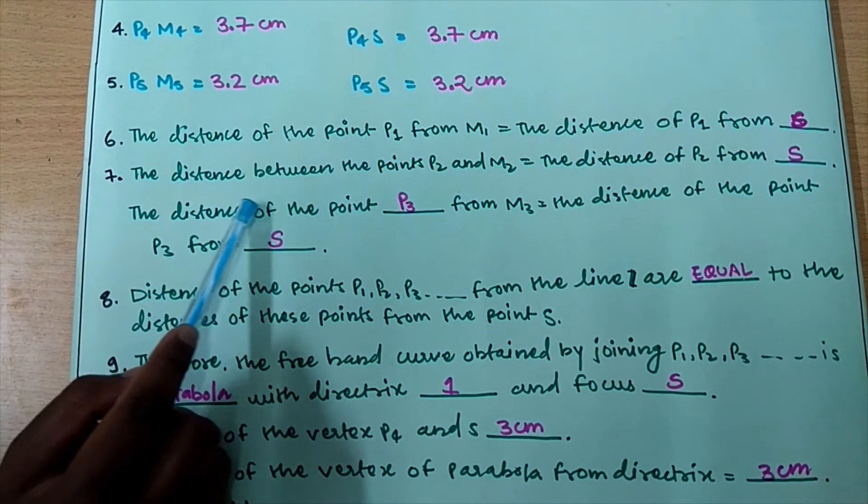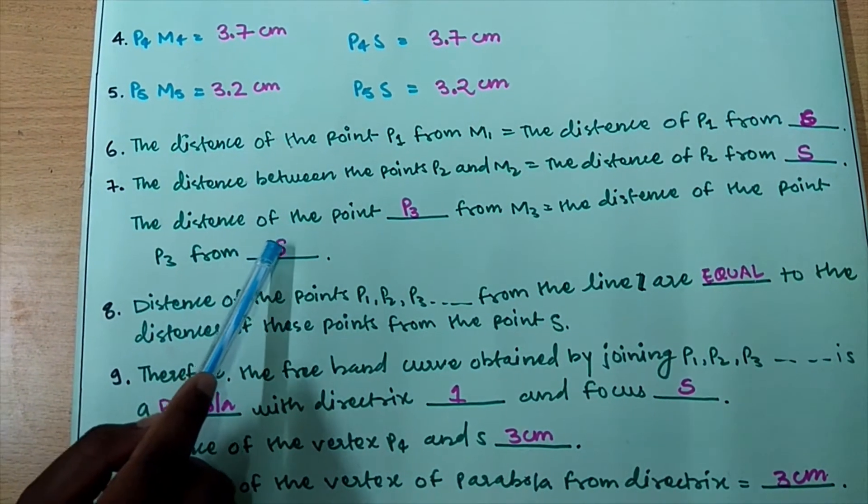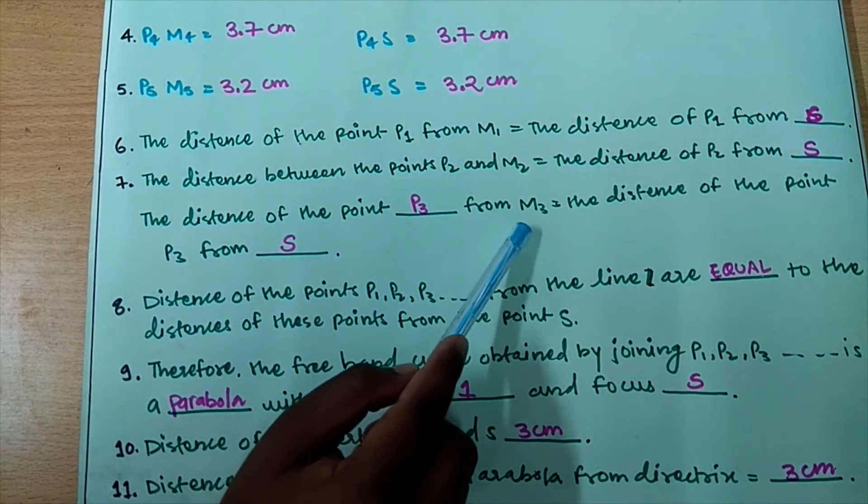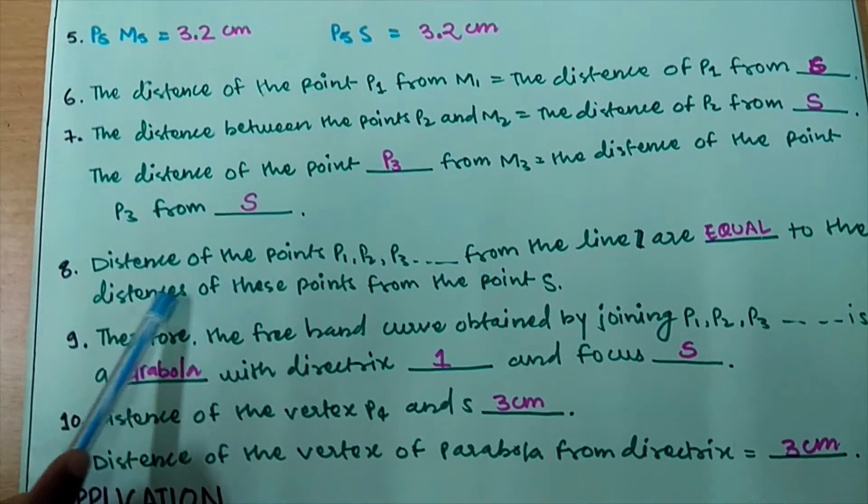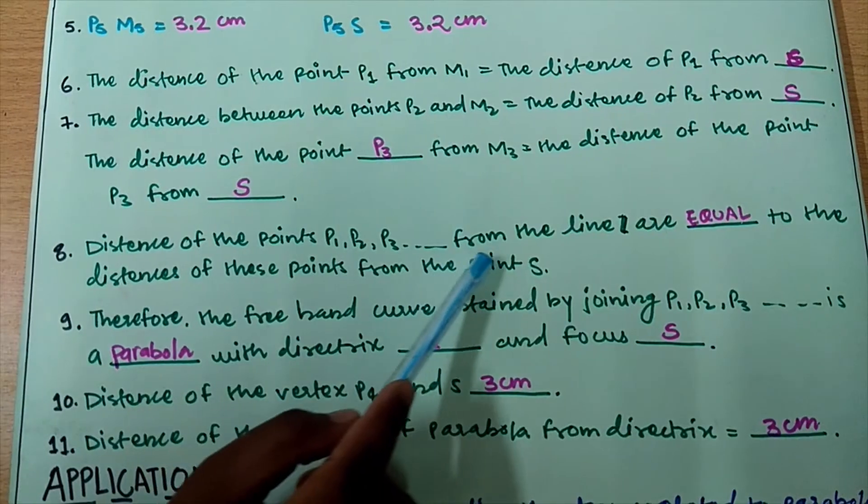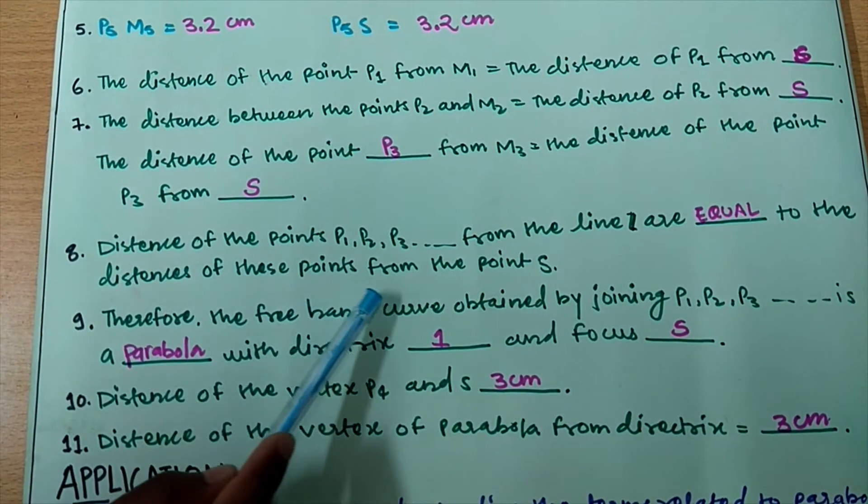The distance between the points P2 and M2 is equal to distance of P2 from S. The distance of the point P3 from M3 is equal to the distance of the point P3 from S. Distance of the points P1, P2, P3 and so on from the line L are equal to the distance of these points from the point S.